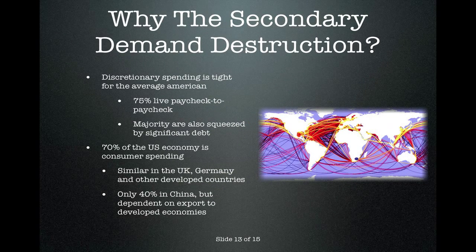So why is there this secondary demand destruction, and why is it so damaging for our economy? The simple answer is the average American is already on a tight budget. Seventy-five percent of Americans live paycheck to paycheck, and the majority are being squeezed by significant debt. Because wages don't increase along with a rapid increase in the price of goods during an oil shock, people simply have even less disposable income. Because people are spending more of their budget on gasoline or food, they have less money to spend on clothes, DVDs, or vacations. Because 70% of the US economy is dependent on consumer spending, when consumers start spending less money on the non-essentials, the economy goes into a recession. We see that the situation is similar in the UK, Germany, and most other developed countries. China's economy is less dependent on consumer spending, but because it is so dependent on exporting goods to consumers in developed countries, when that demand goes away, they also enter a recession. This is why oil price spikes are usually followed by global recessions.